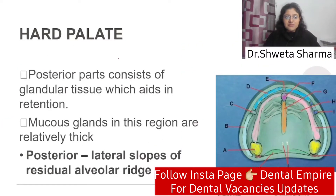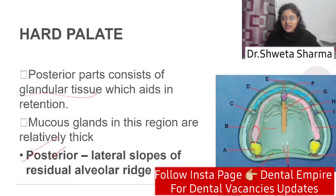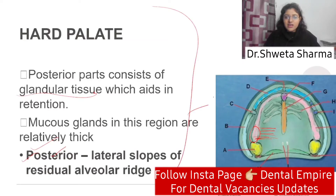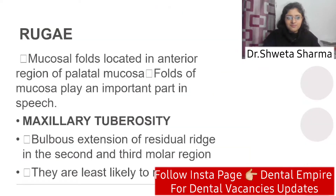The first primary stress bearing area is the hard palate — these are glandular tissues which can increase retention. The second is the posterior lateral region of the ridge. The lateral slope is also a large part of the ridge. So these two are the primary stress bearing areas.